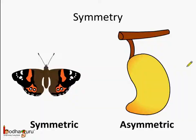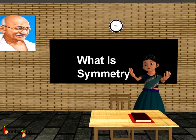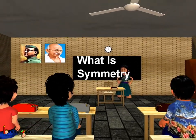Understood children? Now you know a lot about symmetry. Some objects like this butterfly are symmetric in nature as they have two identical halves which are the same in size and shape. Whereas this image of a mango is asymmetric because it cannot be divided into two halves such that each half is identical to the other. That was all about symmetry. Bye-bye children. Thank you.